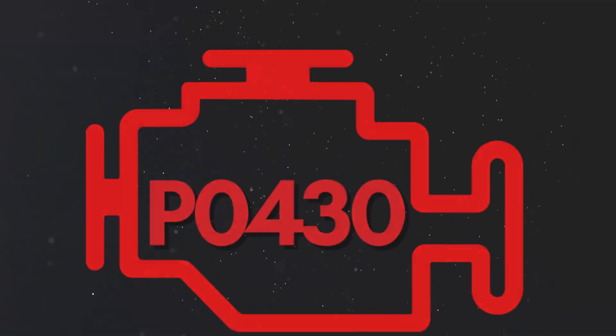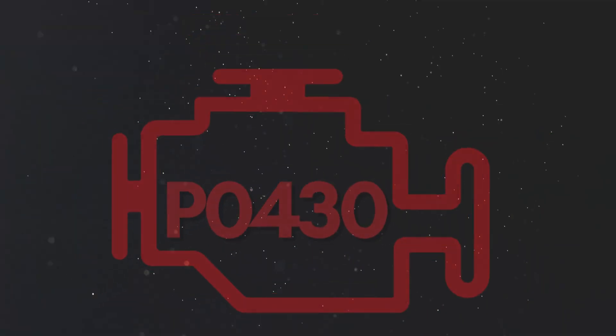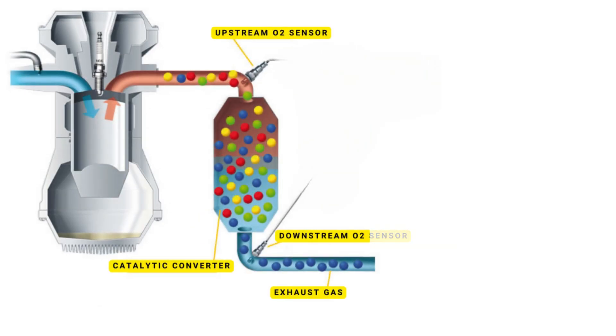Now let's dive into the details of why P0430 gets triggered. The catalytic converter's job is to reduce harmful gases like carbon monoxide, nitrogen oxides, and hydrocarbons.